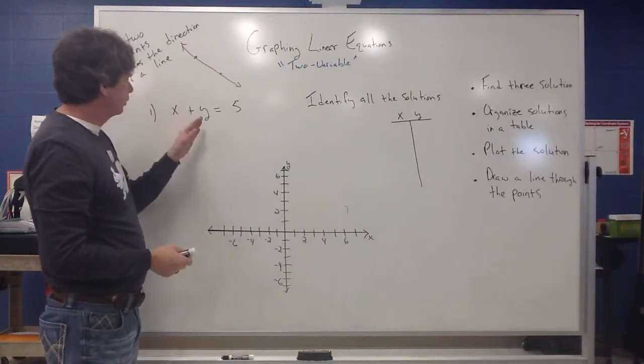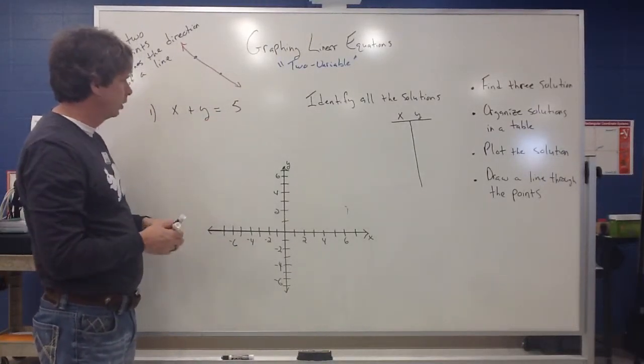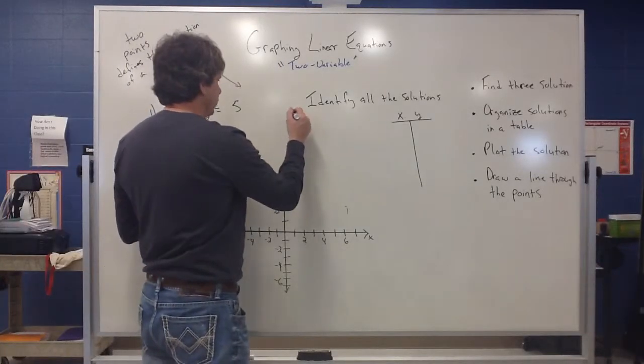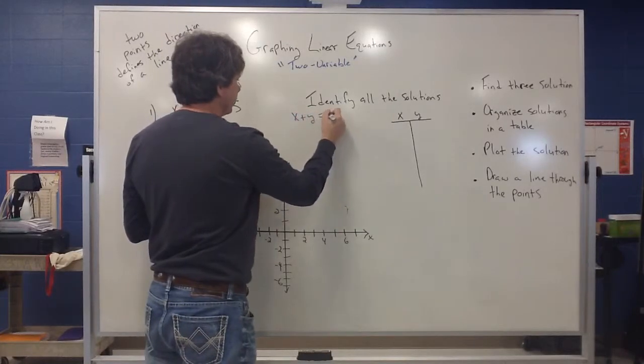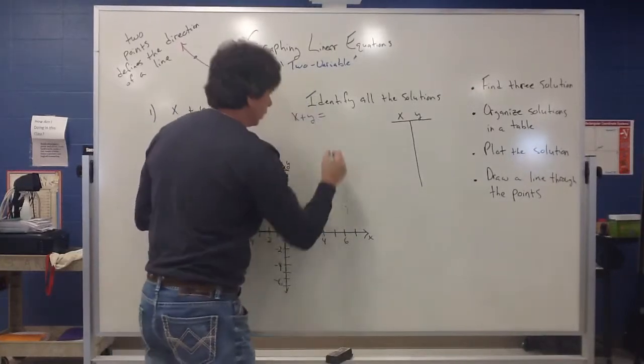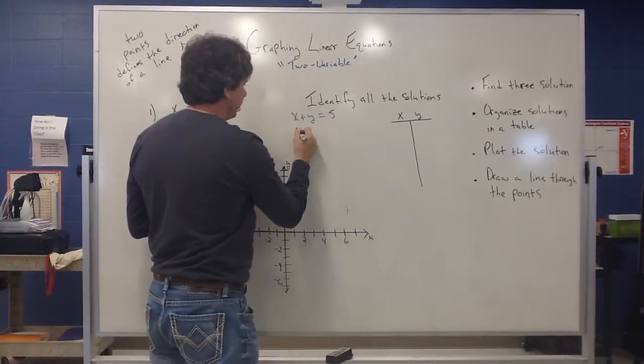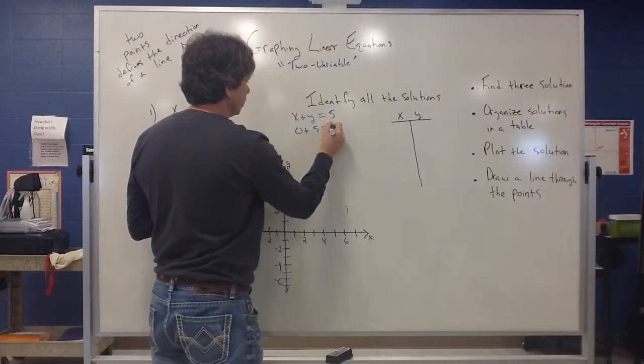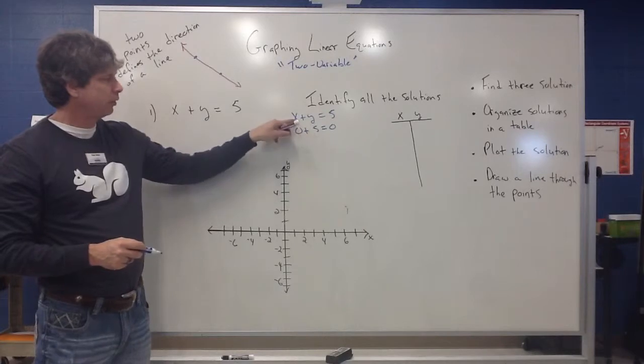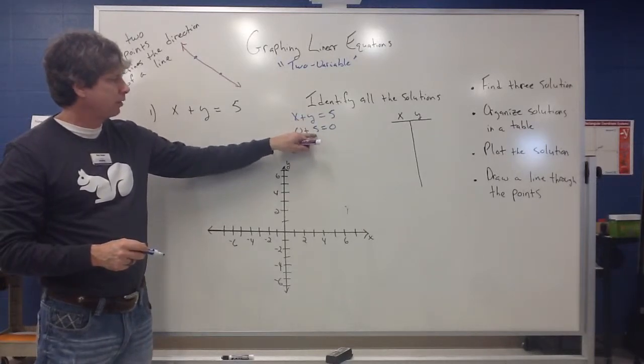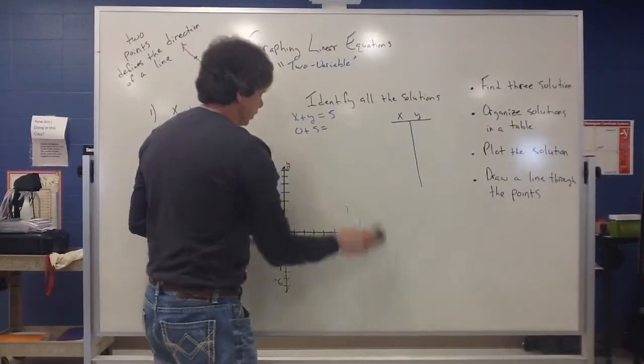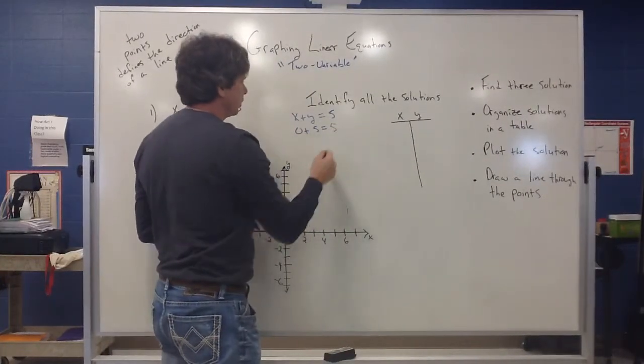So looking at what can you add to another number to get five. Well, to me, the obvious one that jumps out to me is if I have x plus y is equal to five, I could say, well, if x is zero and y is five, that would be a true statement. If I replace x with a zero and I replace y with a five, zero plus five does give me five, and that would be a true statement.